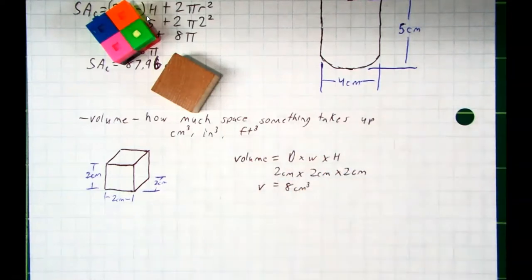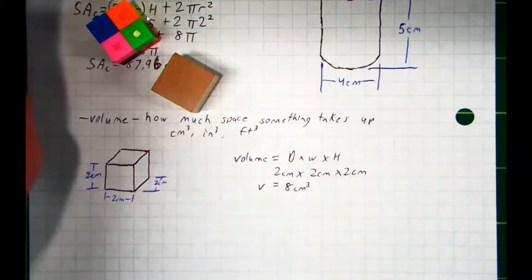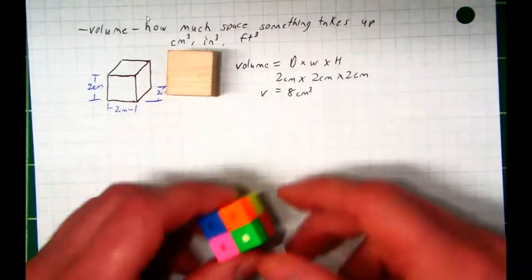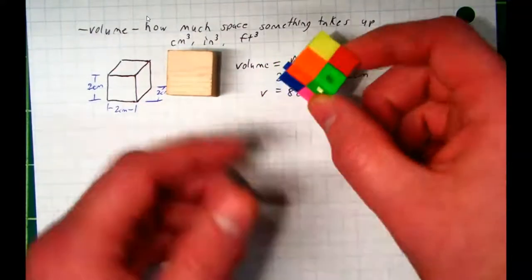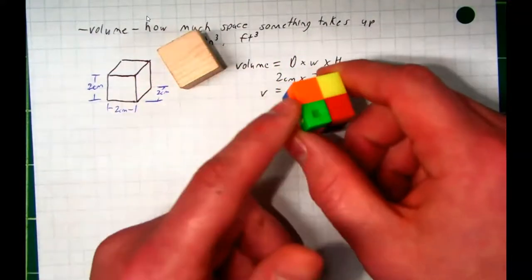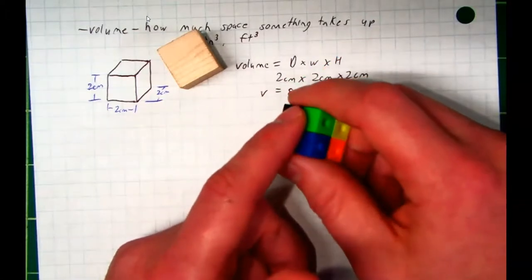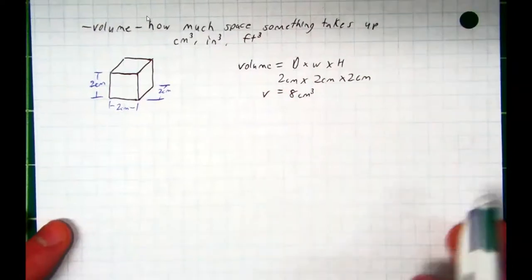And we get a total volume of eight centimeters cubed. And again, I cannot stress this enough, when we say eight centimeter cubed, we literally mean this cube, which is two by two by two, is eight individual cube centimeters. They take up the same amount of space.